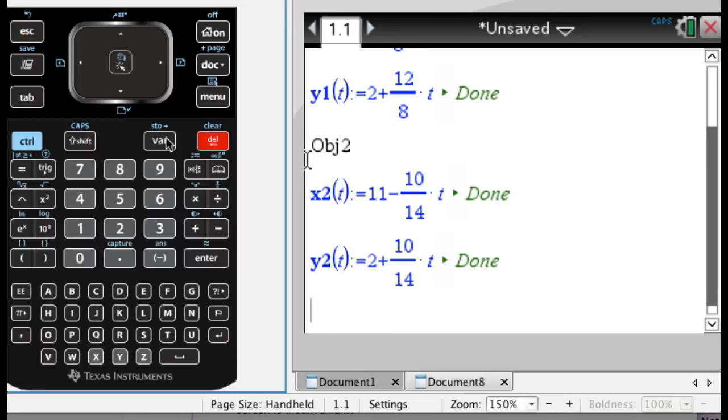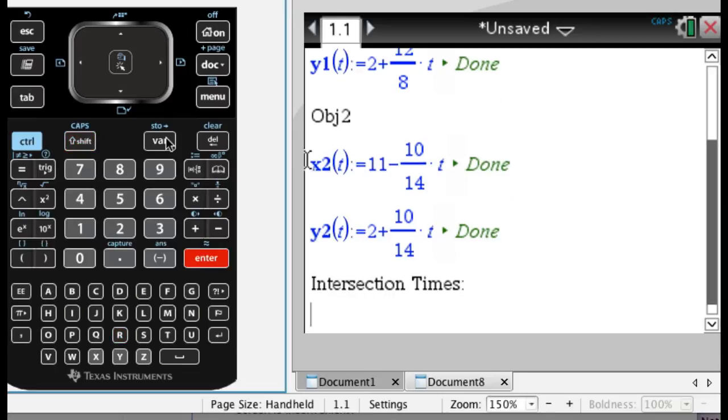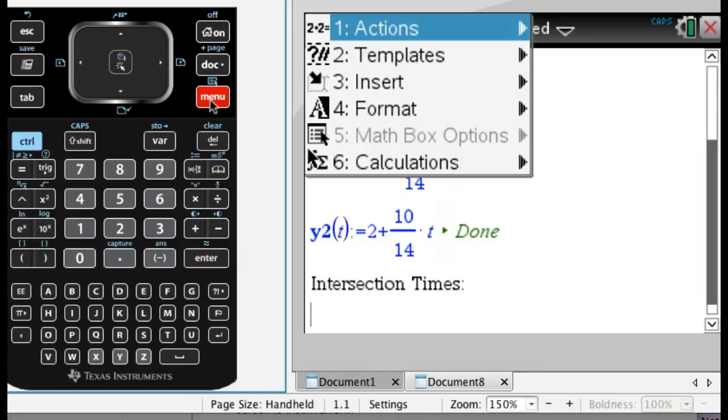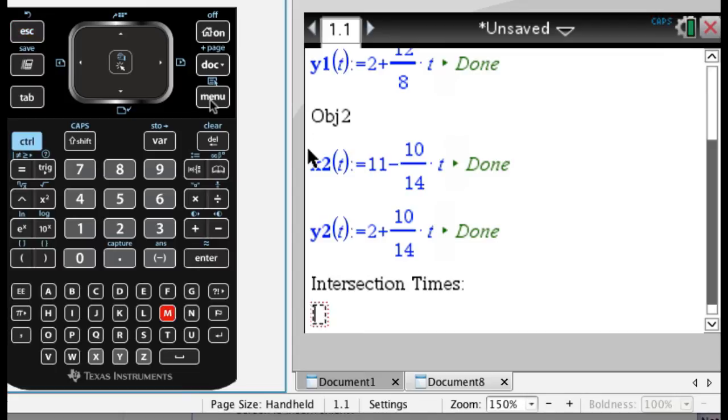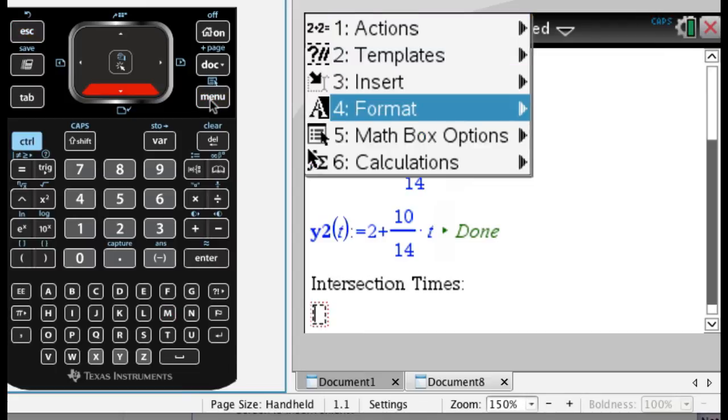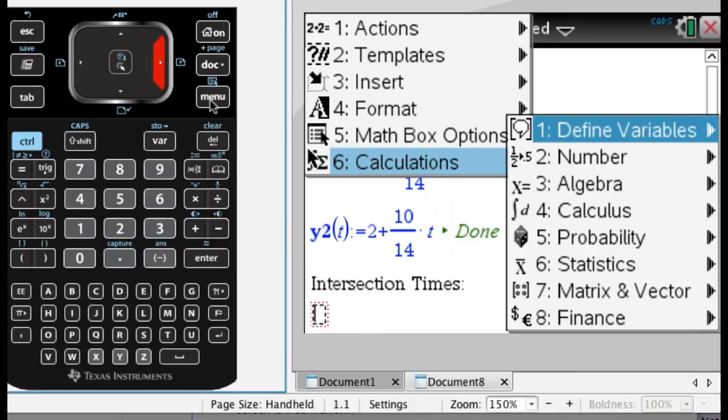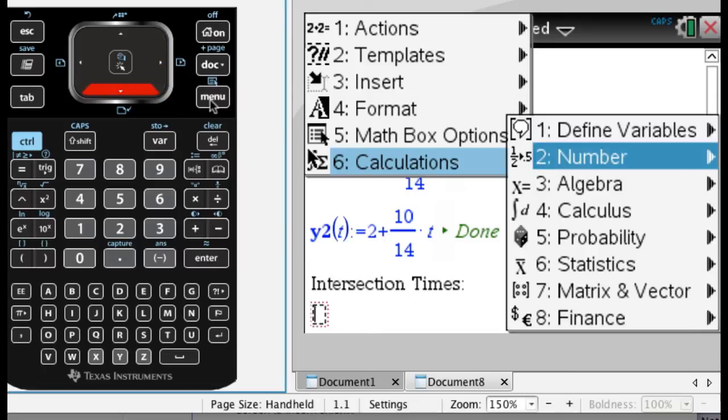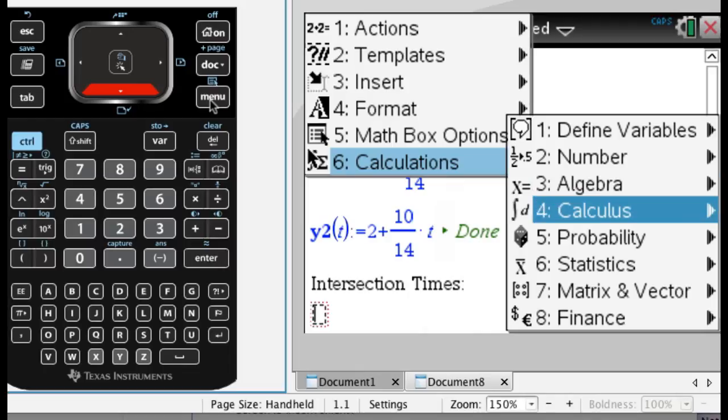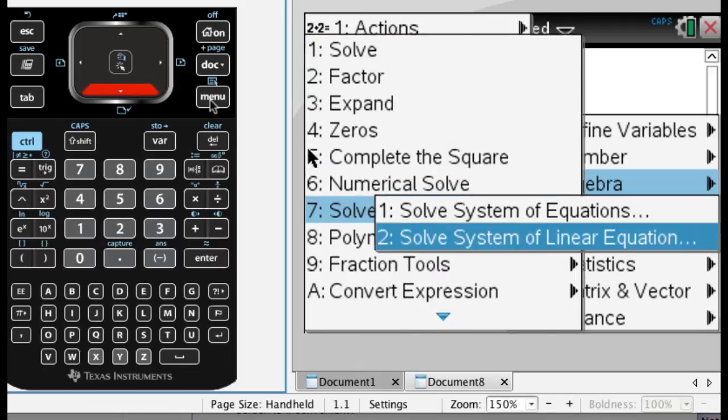Now what I'm going to do is a really common thing is to find the times at which the paths of these objects intersect. So I'm going to say intersection times and I'll do this in a way that someone who's using a non-CAS could do. I'm going to press menu, well I need a math box so control m, and then go to calculations. In calculations you get everything that's available in the calculator page. So I want algebra and I'm going to go down to solve system of linear equations. This is so that people with non-CAS can do it too.